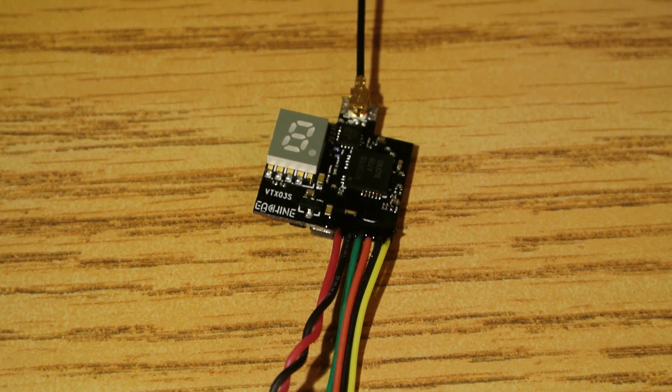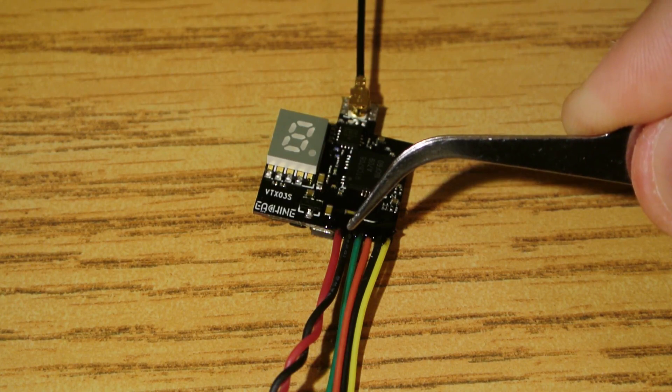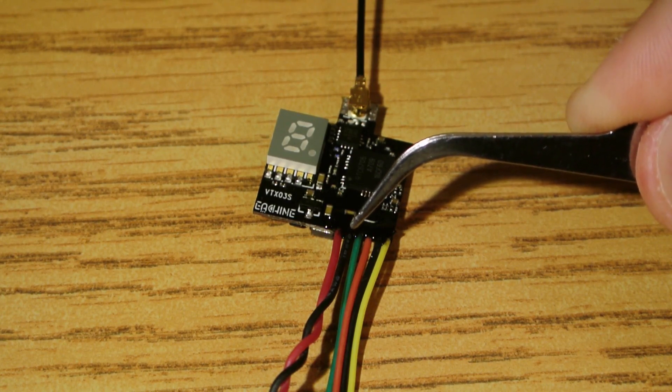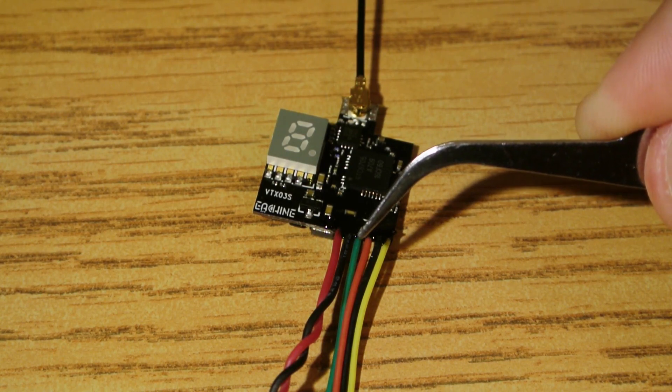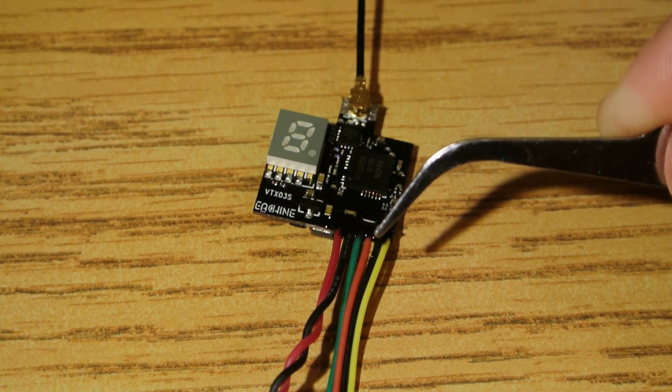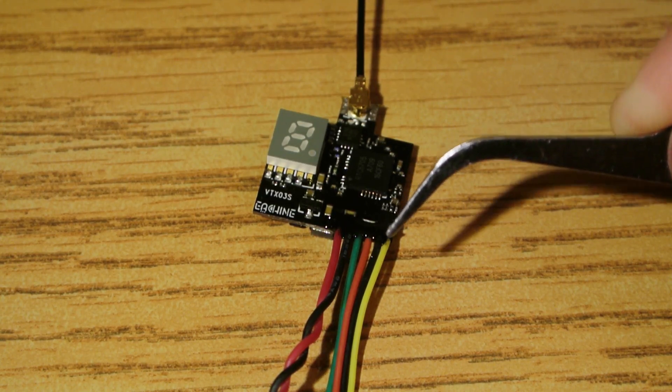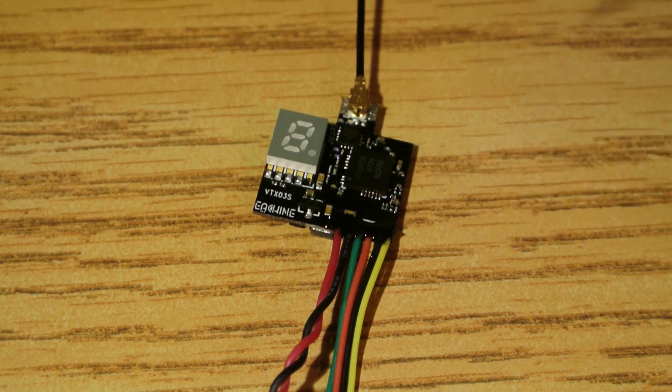The wiring is straightforward. The two thicker red and black wires supply power to the VTX, which only accepts a 3.3 to 5 volt input. The green wire is smart audio, which will be connected to a free UART TX pad on your flight controller. If you are powering your camera with the transmitter, the next two wires will supply 5 volts. And finally, the yellow wire is the video input, which will go to the OSD pad on your flight controller.